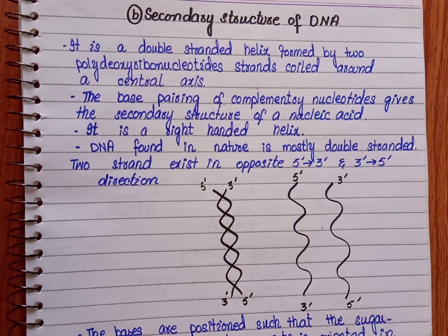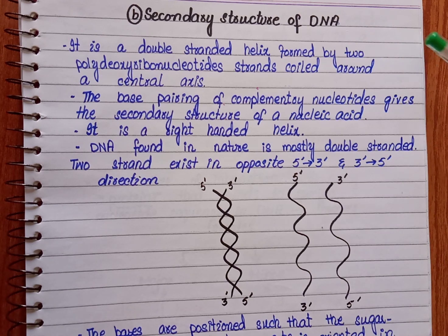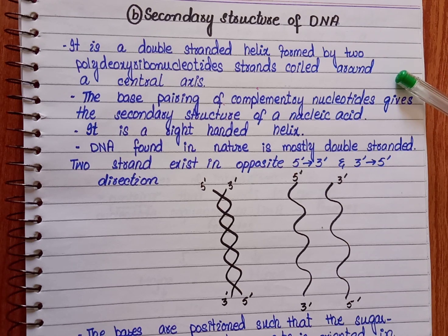We know that the primary structure is basically the number and sequence of nucleotides joined together by phosphodiester bonds, forming one strand of the DNA molecule. When two strands of DNA form, they coil around each other and form the secondary structure of DNA — a double-stranded helix formed by polydeoxyribonucleotide strands coiled around a central axis.